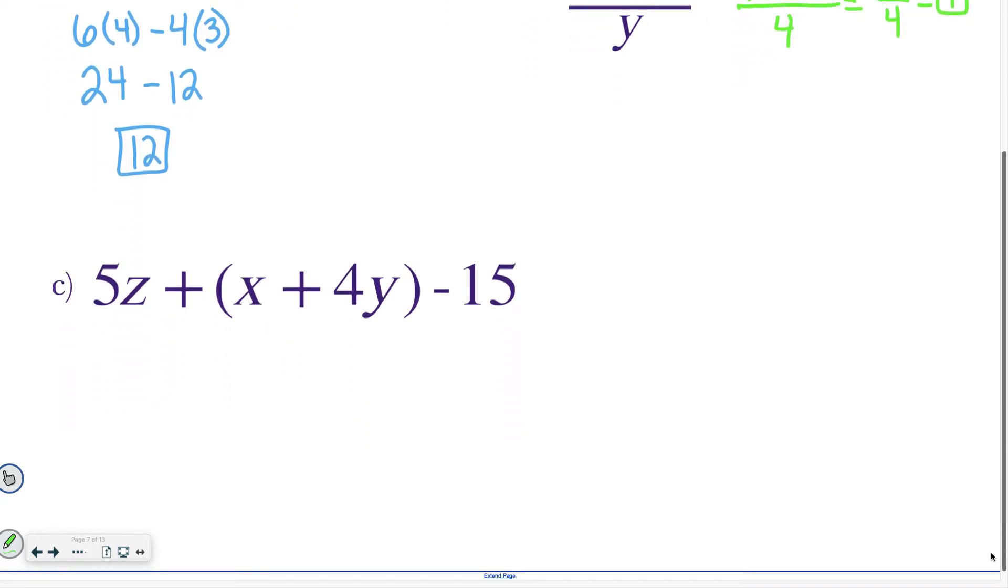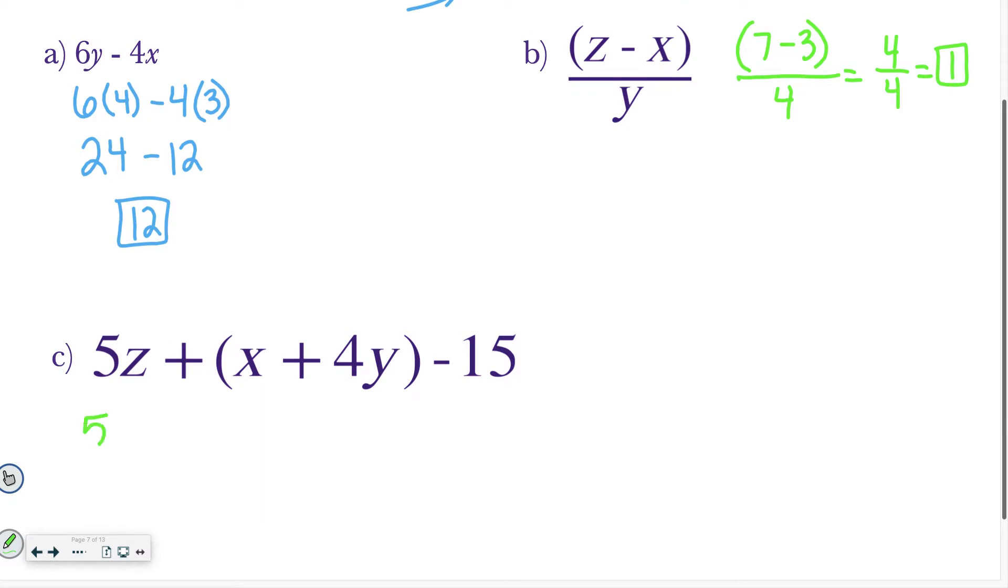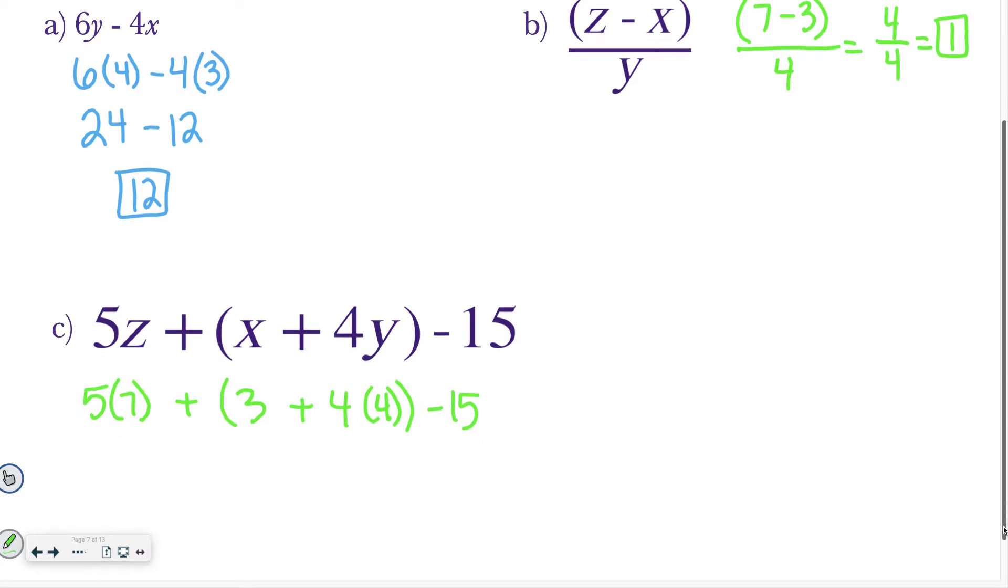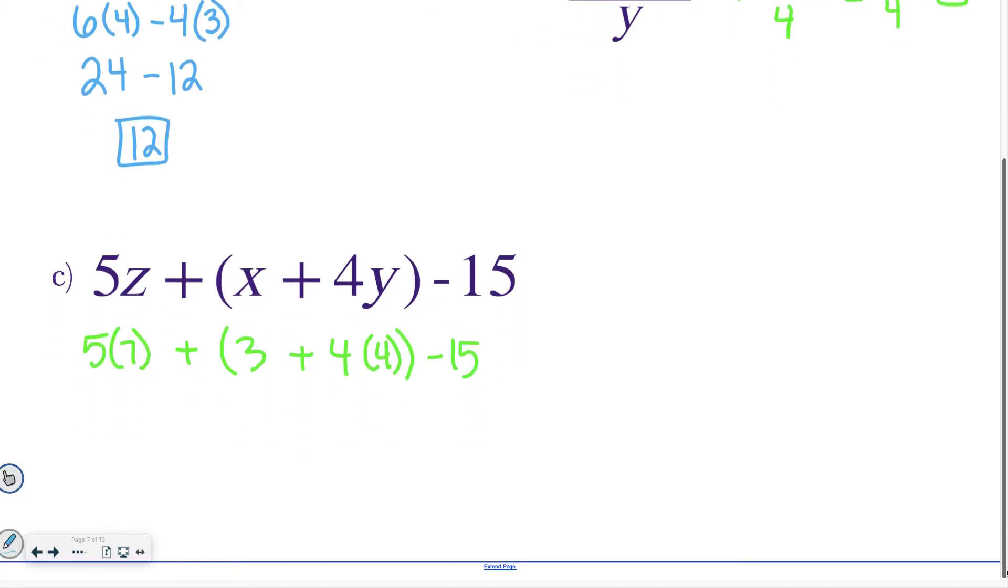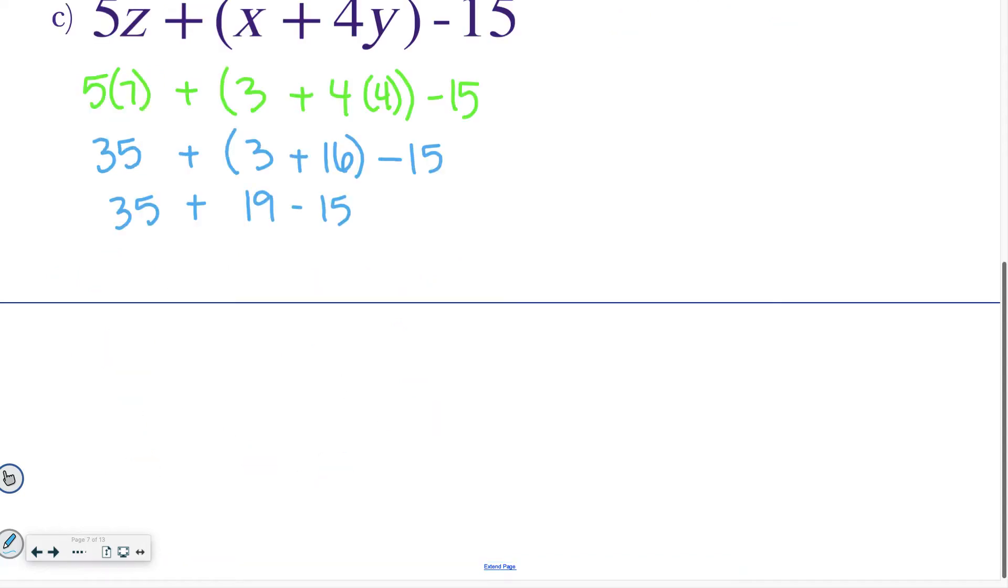Let's move on to the last one. So Z equals 7. So I have 5 times 7 plus 3 plus 4 times 4 minus 15. Okay, so that first step, I just plugged in all of the values I knew. I start with my parentheses. So 5 times 7 is 35 plus, and then I have 3 plus 4 times 4 is 16 minus 15. I keep going inside of my parentheses. 3 plus 16 is 19. And now I just have addition and subtraction left. So I have 35 plus 19 first, so I'm going to do that. And 35 plus 19 is 54. 54 minus 15 is 39. And that is my final answer for that problem.